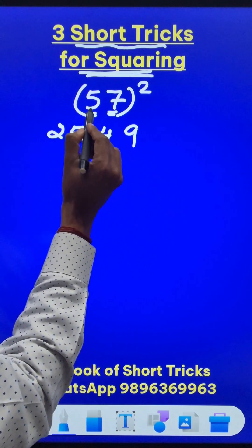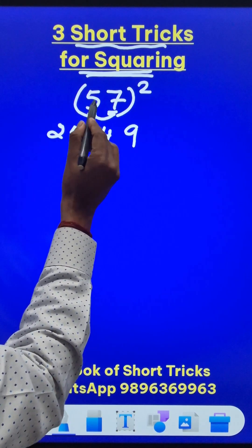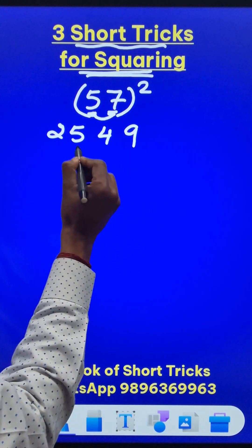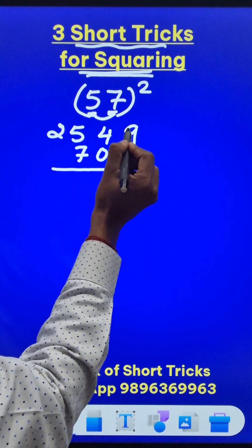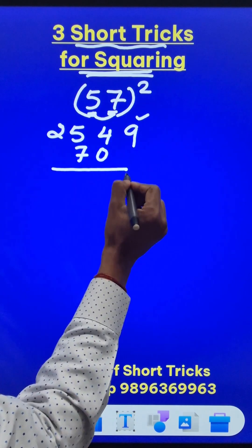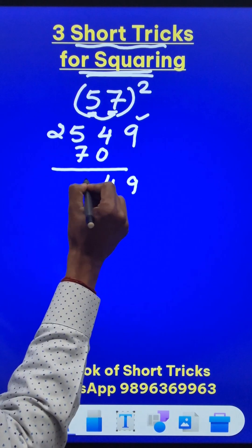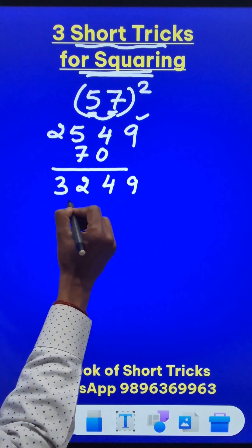So I write them together like this and multiply 7 times 5 you get 35 and double of 35 is 70. Write it like this. You have to leave one digit from the right hand side. And just add vertically 9, 4, 12 means 2, 1 carried so 3, 3, 2, 4, 9 is the square of 57.